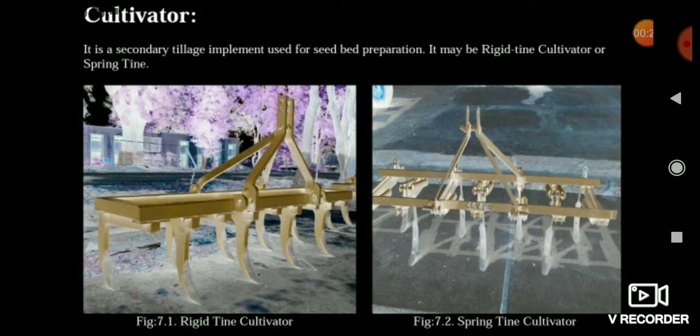The best one is Spring Tyne Cultivator because whenever springs are present, the cultivator can move up and down automatically. Whenever there is some obstacle while working, the cultivator will automatically move up because it has fluctuation in its depth of working due to the spring.